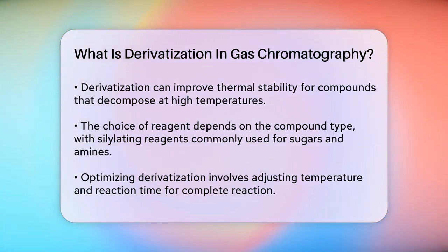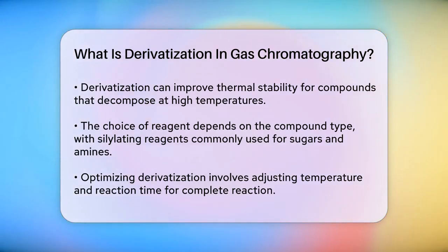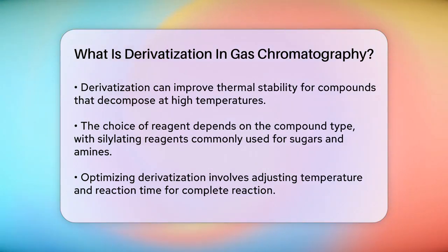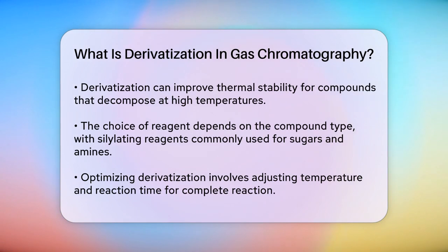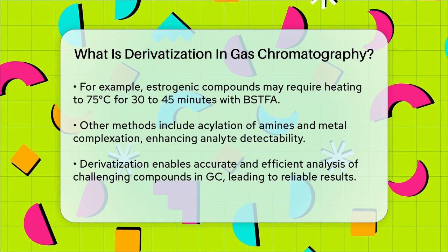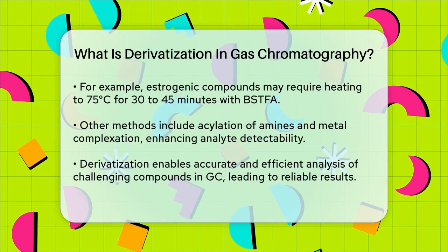The process of derivatization must be optimized to ensure the reaction goes to completion. This often involves adjusting the temperature and reaction time. For instance, derivatizing estrogenic compounds with BSTFA might require heating the sample to 75 degrees Celsius for 30 to 45 minutes to ensure all active hydrogens are replaced with TMS groups.